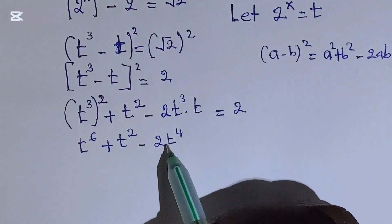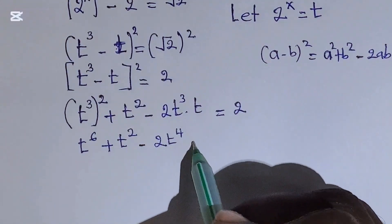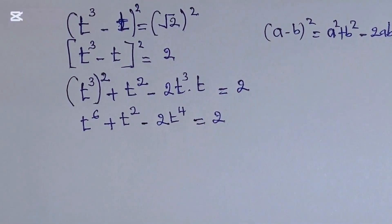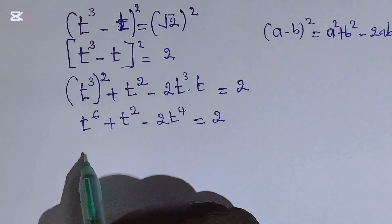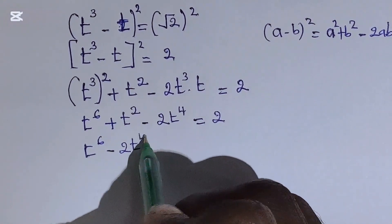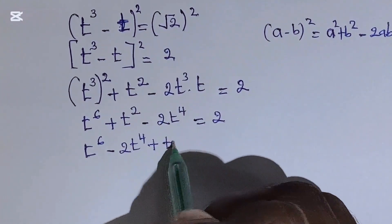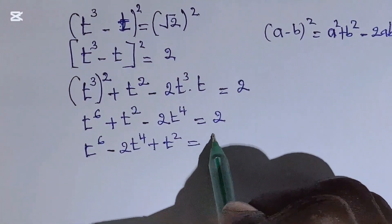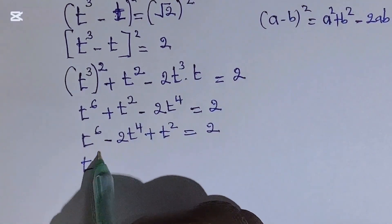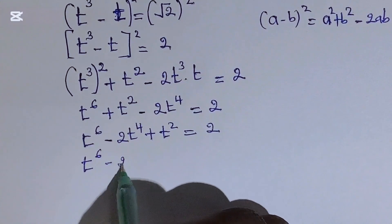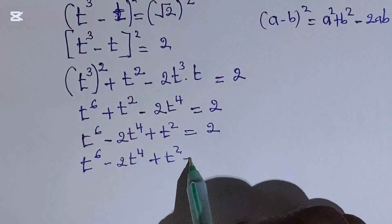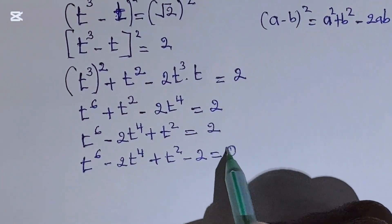Which is equal to t squared, equal to t. Okay, by rearranging, this will provide t to the power of 6 minus 2t to the power of 4 plus t squared, which is equal to 2. Okay, now this will provide t to the power of 6 minus 2t to the power of 4 plus t squared minus 2, which is equal to 0.